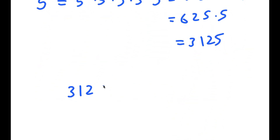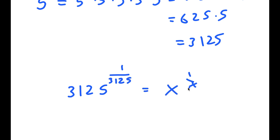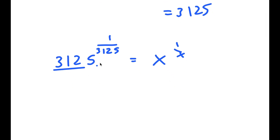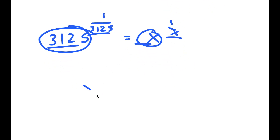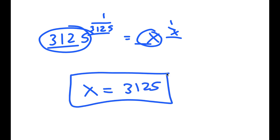So I get 3125 to the power of 1 over 3125 is equal to x to the power of 1 over x. And now because these two have the same form, this means these two numbers are equal to each other. So x is equal to 3125. This is my solution.